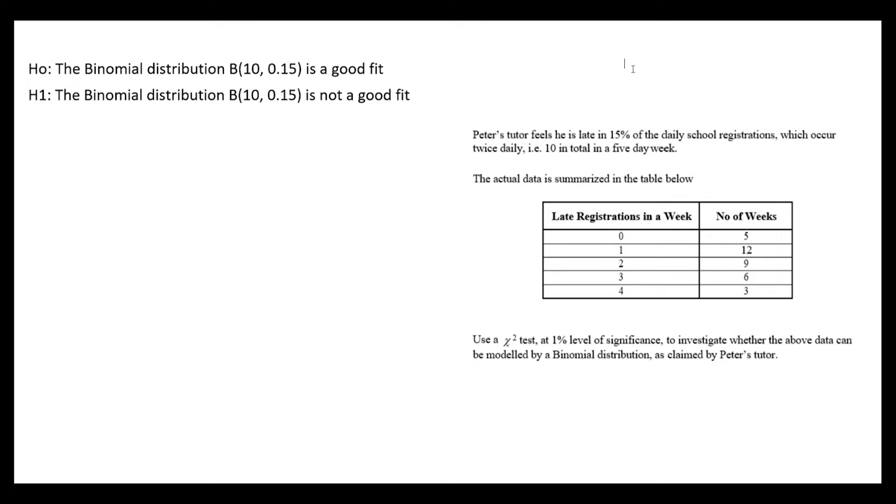So this is a goodness of fit. We want to see how well the binomial distribution will fit this data. We'll start, as always, with our hypotheses. The null hypothesis says that the binomial distribution with n value of 10 and a p value of 0.15 is a good fit, and the alternate, that same distribution is not a good fit.